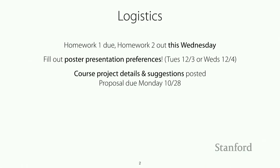We also posted details on the course project and instructions, including instructions for the proposal, the milestone, and the final project and poster session. Please take a look at that. We also posted some suggestions from the broader AI community on Piazza. The proposal, which is the first part of the project, is due on Monday, October 28th, but we encourage you to get started early and to find a group to work with.